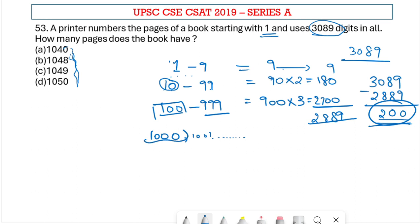I know for one number after 999, I'm going to print four digits. The next number, four digits. So basically, for a single number, I'm printing four digits. Now we know that 200 is the total number of digits that I printed after 2889 digits.